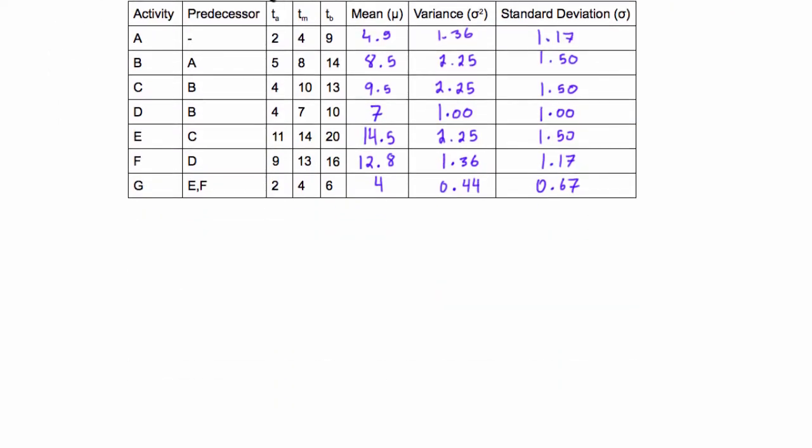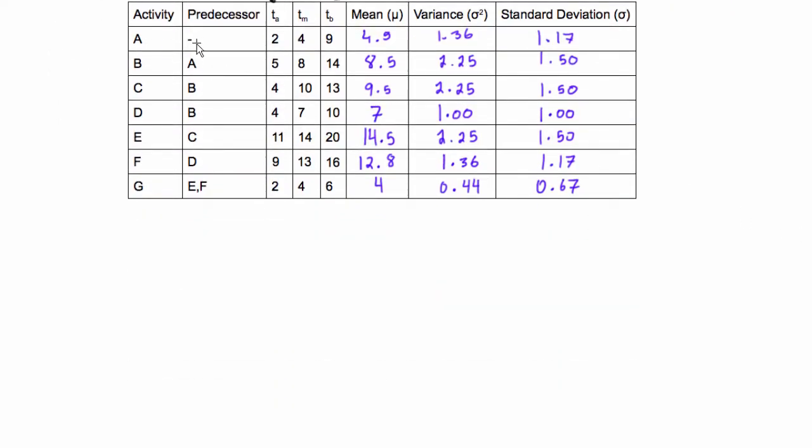Let's look at this. Activity A has no predecessor, so activity A will come first, and then activity B depends on A. So we already know what the first two arrows and nodes will be in our CPM network diagram, so let's go draw them in.